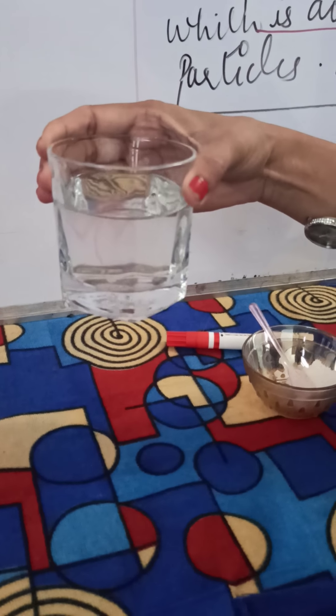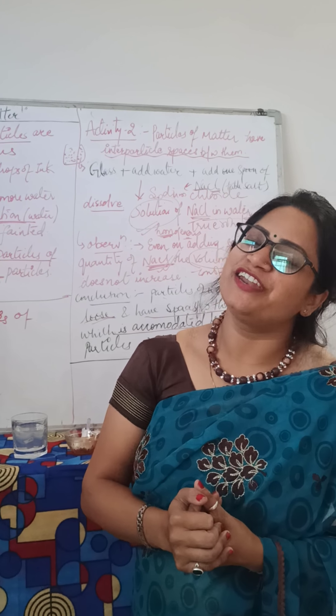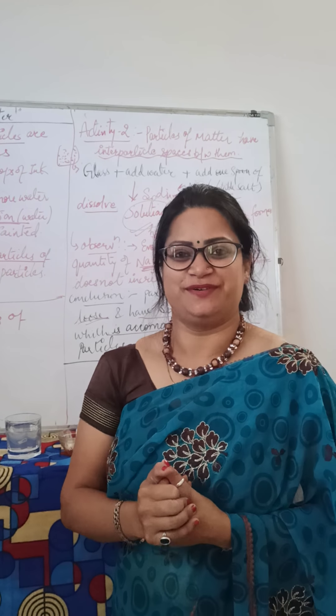Let's see this experiment through a live activity. Here I have water filled in a glass, and this is table salt. I am going to add a spoon of table salt into the water. After some time, on complete dissolution, this becomes a clear solution — a homogeneous solution — and the volume of the water remains the same; it does not increase. Hence, on dissolving NaCl into water, the volume remains constant but complete dissolution takes place, showing that water particles have inter-particle spaces in which sodium chloride particles dissolve.